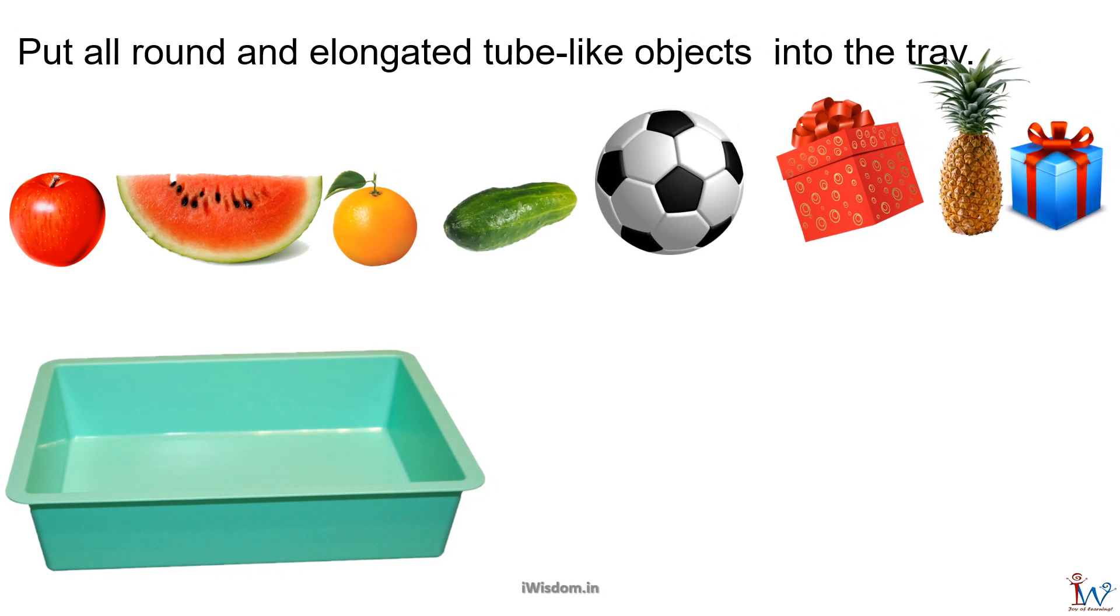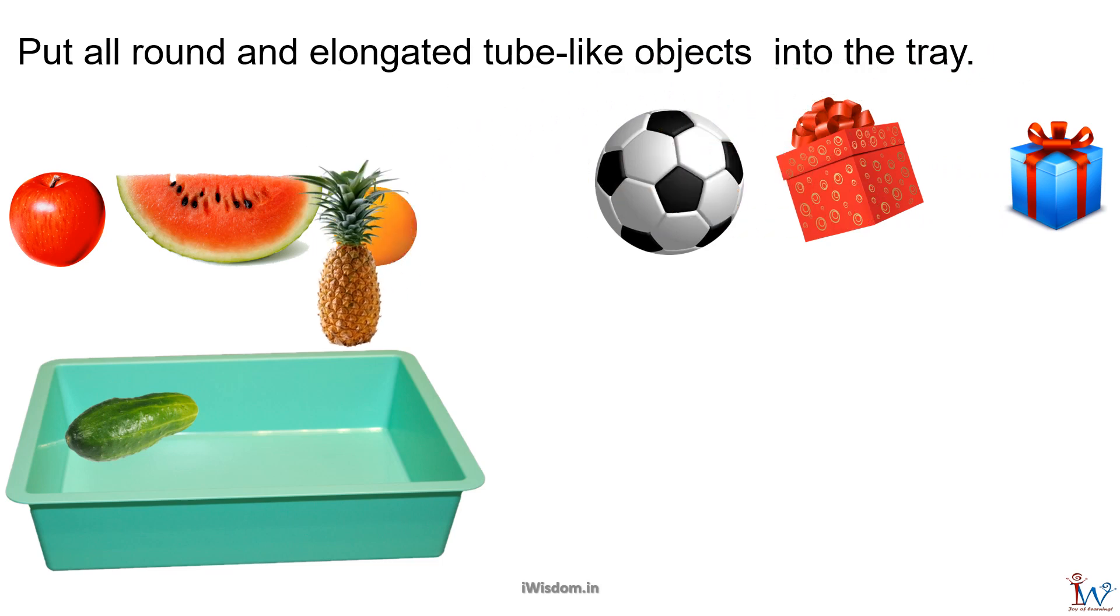Now put all round and elongated objects into the tray. Both vegetable cucumber and fruit pineapple are round on one side and elongated in the other direction, so I am placing them in the tray. That's right. You have identified them correctly.